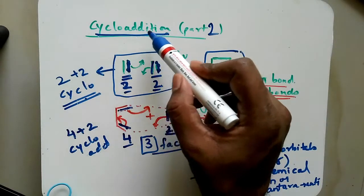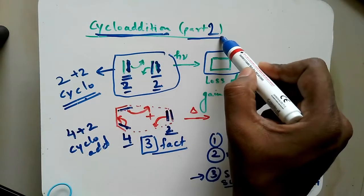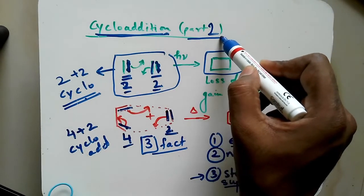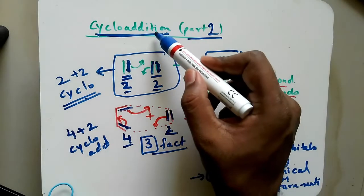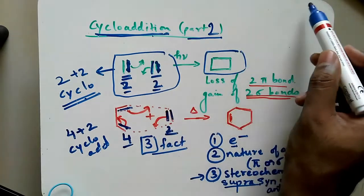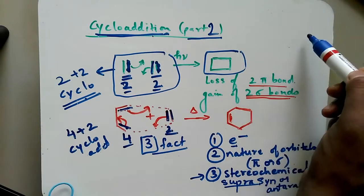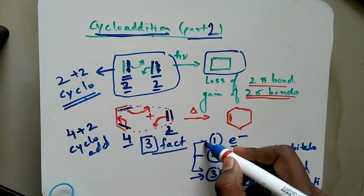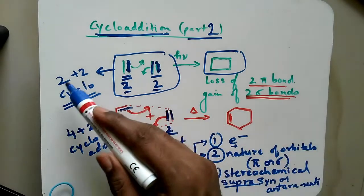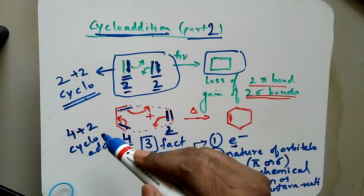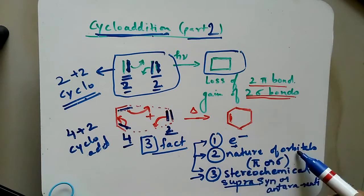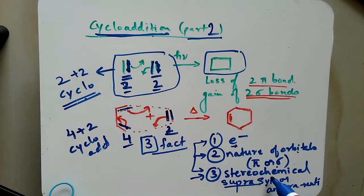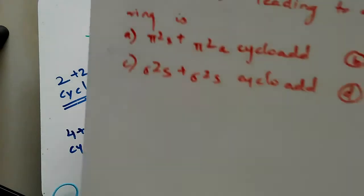Hello friends. This is cycloaddition part 2. For part 1 and other parts of cycloaddition reaction, which is a type of pericyclic reaction, the link will be over here. Three important factors that we have to consider: the electron count — that is 2+2 or 4+2 — the nature of orbitals, that is pi or sigma, and then the stereochemistry, which is suprafacial or antrafacial addition.